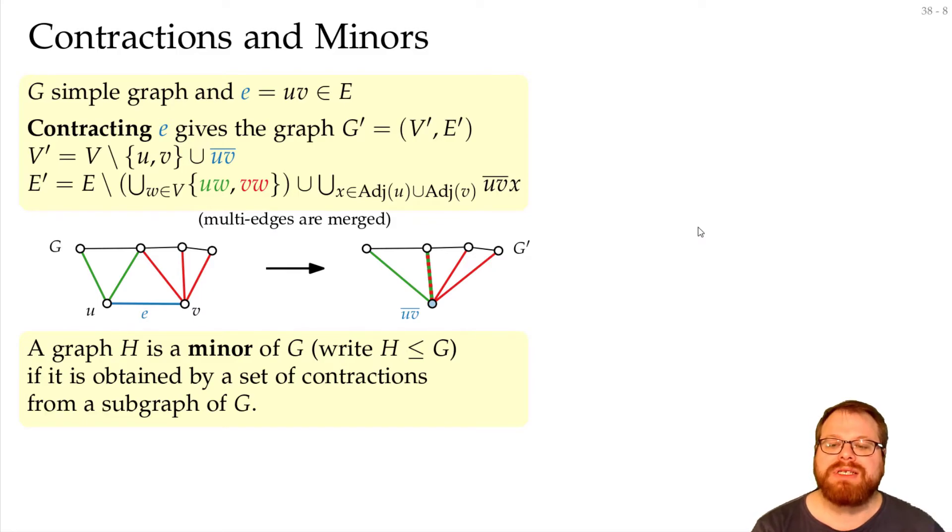Now a graph is called a minor of another graph, if we can obtain it by a set of contractions from a subgraph. So this sounds a bit complicated. In general, this is a minor of this graph, because we can obtain it by a contraction. But even if the black edges would not be here in this graph, it still would be a minor of this, because we can get it from a subgraph of g.